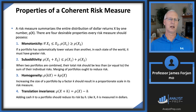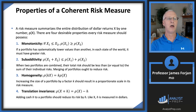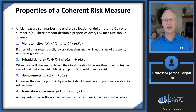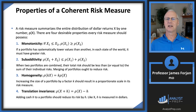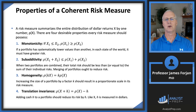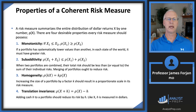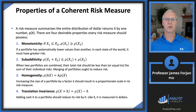Let's think of the chronology. We had fat-tail events, so professionals and academics came up with value at risk, which at first seemed to solve the problem. However, it didn't completely solve the problem. So academics came up with the concept of a coherent risk measure — with four properties that every risk measure must satisfy to be complete.